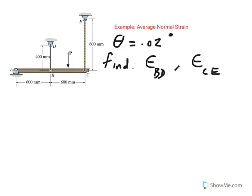So in order to find average normal strain, first of all, what is the definition of average normal strain? Average normal strain, which is denoted by epsilon, is defined as the ratio of the change in length - in this case the change in length is denoted by delta - divided by initial length.